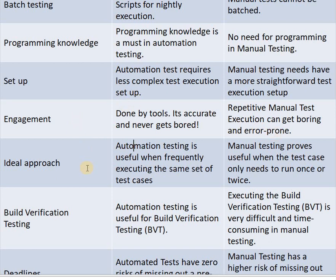Next parameter is ideal approach. Automation testing is useful when frequently executing the same set of test cases, whereas manual testing proves useful when test cases only need to run once or twice.